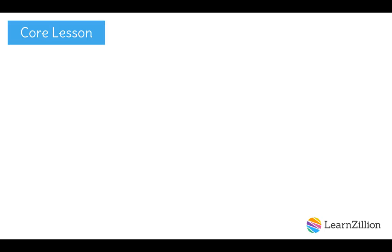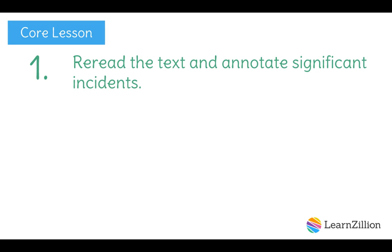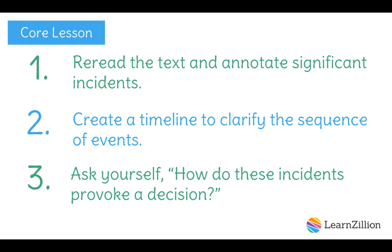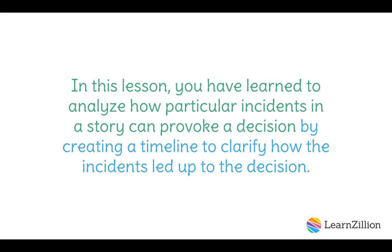Today we've explored how a series of events led up to a character's decision to become an outlaw. We used these three steps to guide us: number one, we re-read the text and annotated significant incidents; number two, we created a timeline to clarify the sequence of events; and number three, we asked ourselves how do these incidents provoke a decision? In this lesson, you have learned to analyze how particular incidents in a story can provoke a decision by creating a timeline to clarify how the incidents led up to the decision.